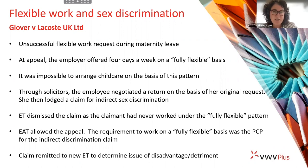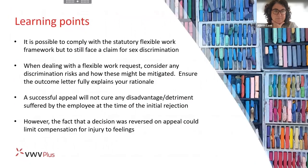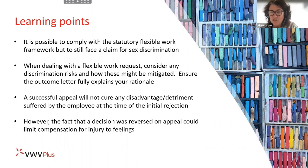Miss Glover appealed successfully to the EAT. The EAT held that the flexible working appeal outcome did count as a PCP — a provision, criterion or practice — for the purposes of indirect discrimination, and it didn't matter that Miss Glover hadn't ever actually worked under that fully flexible arrangement. There was still a detriment. The EAT has remitted the claim back to a new tribunal to consider whether Miss Glover suffered disadvantage or detriment as a result of the appeal outcome. The EAT commented it would be hard to see how the appeal outcome would not have caused Miss Glover to suffer disadvantage, given that she had to consider resigning from her job.